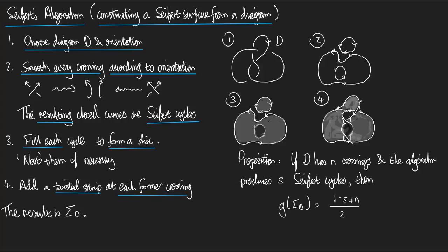And simply console yourselves with the fact that all we need to know is the genus of the resulting surface. So, we call the surface that we get out, it's called sigma D. And we have a proposition. It says, if D has N crossings, and the algorithm produces S Seifert cycles, then the genus of this Seifert surface is 1 minus S plus N over 2.